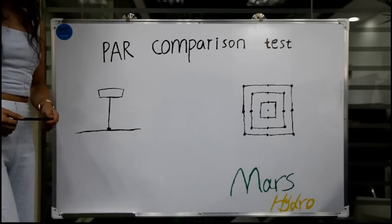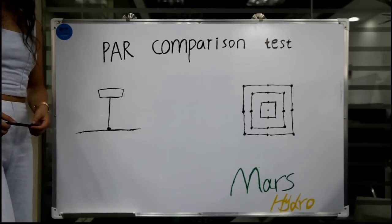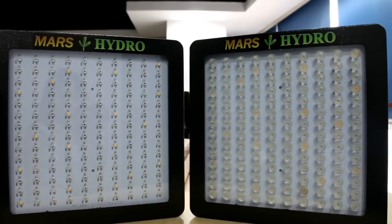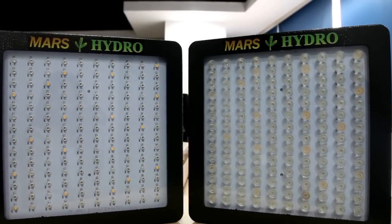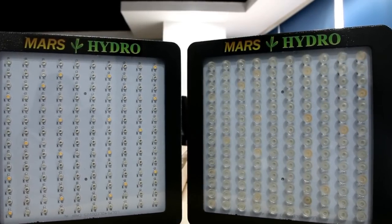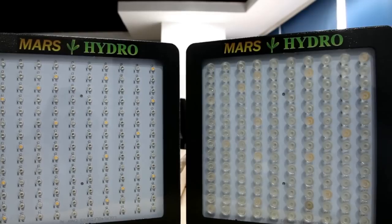Hi everyone, this is Mars Hydra. Today we are going to run a PAR comparison test on one of our Mars 2 700W light and the other is a Mars 2 700W light with a secondary lens.